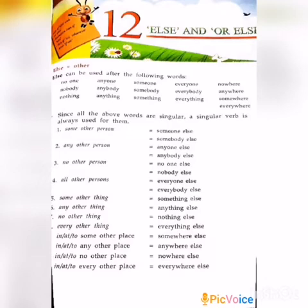Since all the above words are singular, a singular verb is always used for them. You know the difference between singular and plural. Some other person is equal to someone else or somebody else. Already I told you else is equal to 'other'. Any other person is equal to anyone else or anybody else.